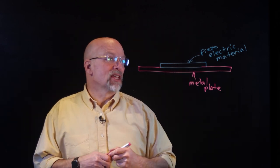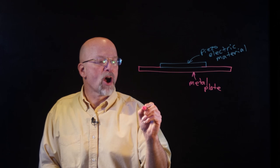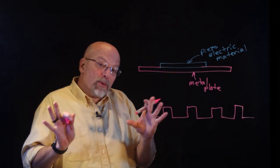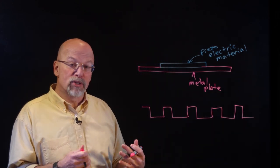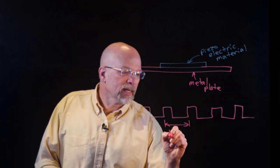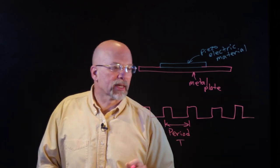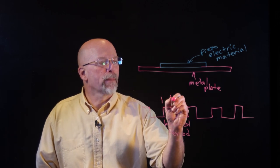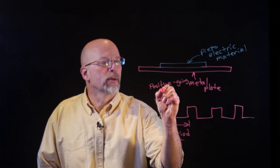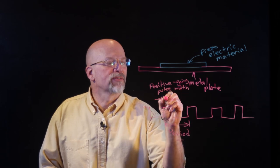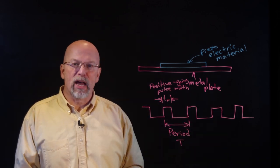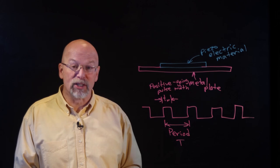The electrical signals you put on these piezoelectric materials are in the form of a pulse width modulated periodic pulse train. A PWM signal has two features that define it: one is the period, defined with a capital T, and the other is the pulse width — the positive-going pulse width — defined with a little T sub W. Those two in themselves define this pulse width modulated signal.